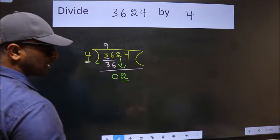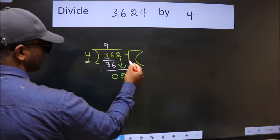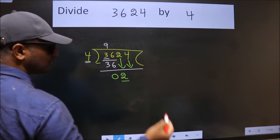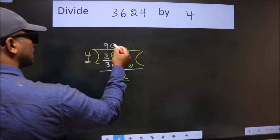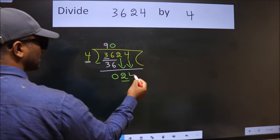So we should bring down the second number. And the rule to bring down second number is put 0 here. Then only we can bring this number down.